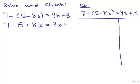On the right-hand side I just copy the problem down. The left side is still not simplified because I need to combine 7 minus 5. Those are the like terms. So I have 2 plus 8x equals 4x plus 3.